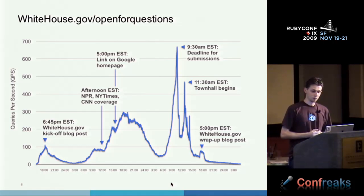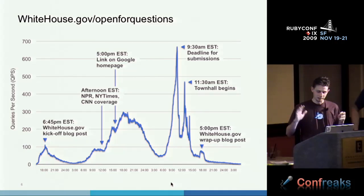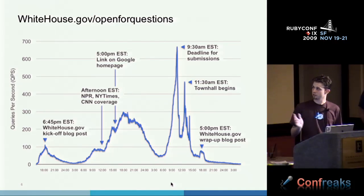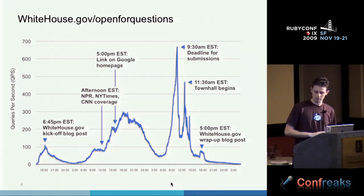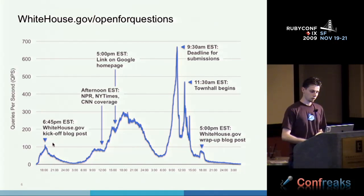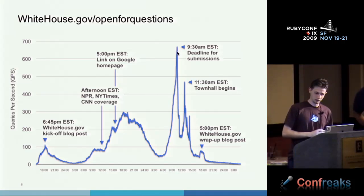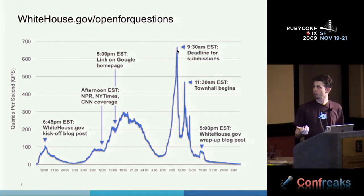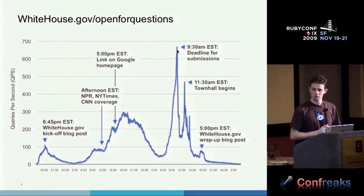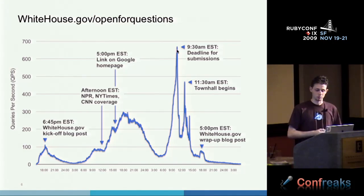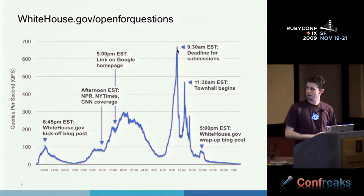Here's an example of one of our higher profile applications. At the beginning of the year, the president used this for a national White House TV event. You can see traffic going along, and right here was the deadline where you could ask the president a question online — it spikes up to about twice the normal traffic. If you're using a normal provider, you'd have to provision your server to handle 700 TPS for the entire three days. Whereas with App Engine, you just pay for those 15 minutes while you were actually running at 700 TPS.